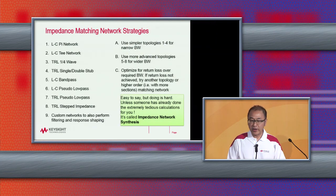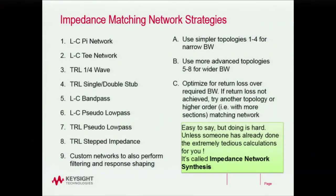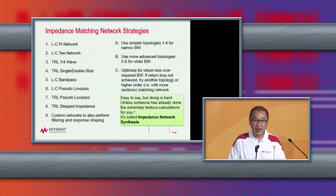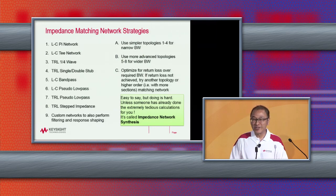One strategy to tackle this problem: on the left I summarize nine categories of matching networks we can use. In the interest of time I can't describe every one, but generally the first four — LC Pi, LC T, quarter-wave transmission line, and double/single stub matching — are what you learn in school and are better for narrowband matching. For broadband matching, we need more sophisticated networks like LC bandpass and pseudo low-pass. The transmission line distributed version of the pseudo low-pass is very attractive because we can implement it directly in microstrip without buying lumped components.